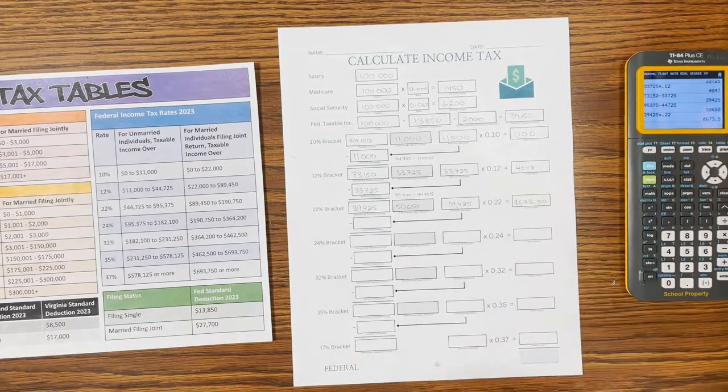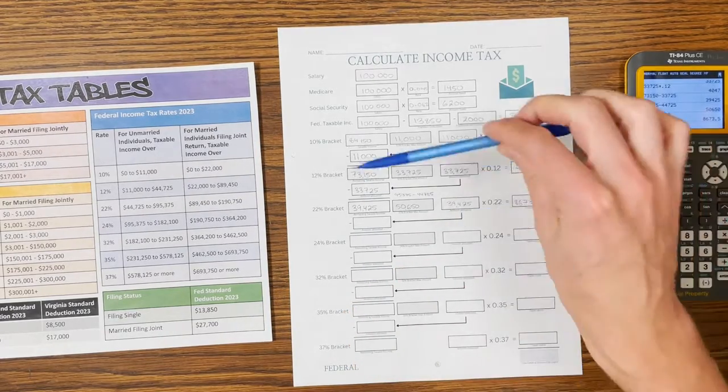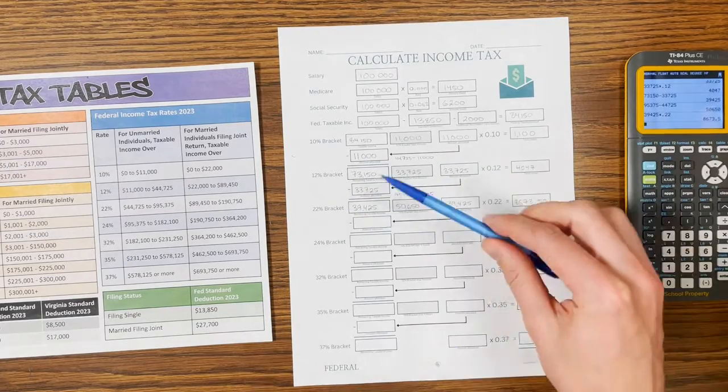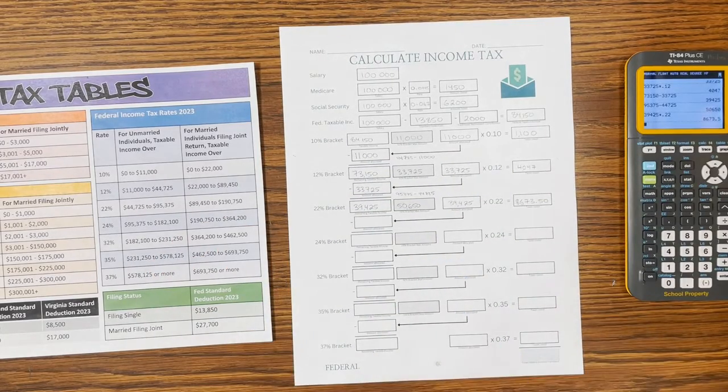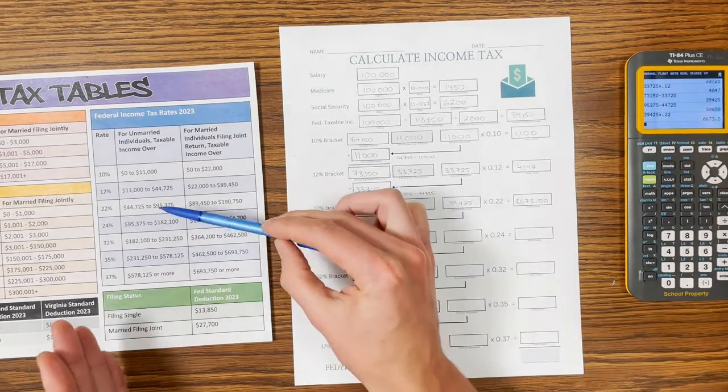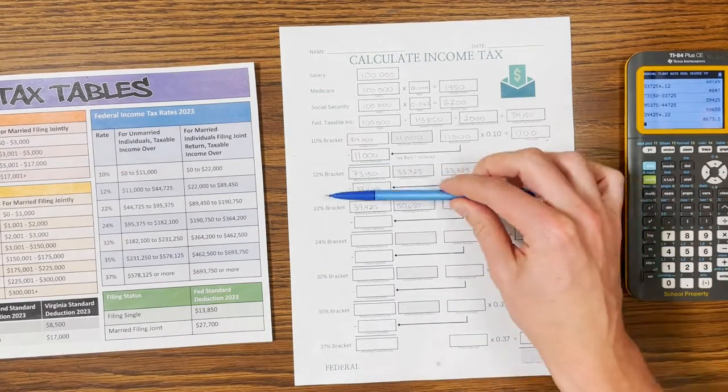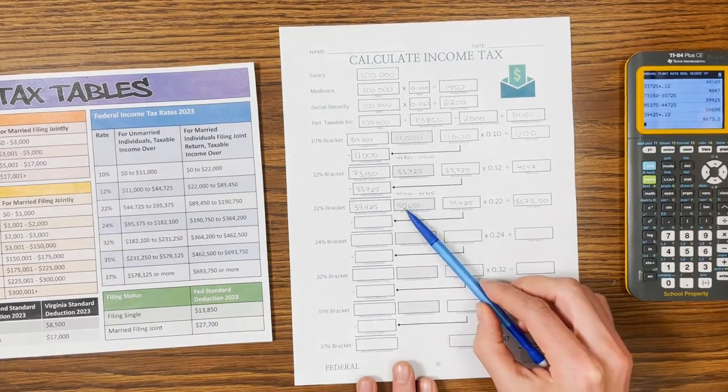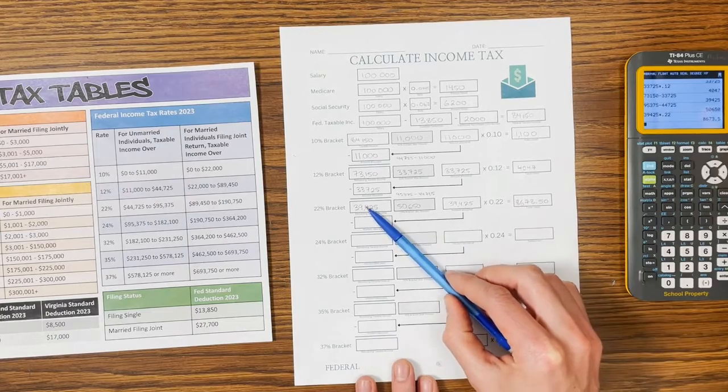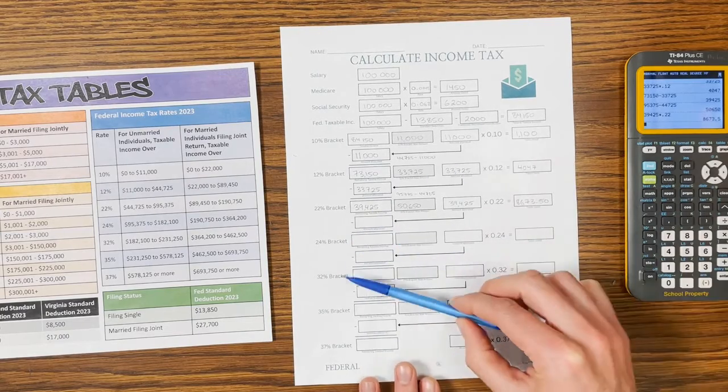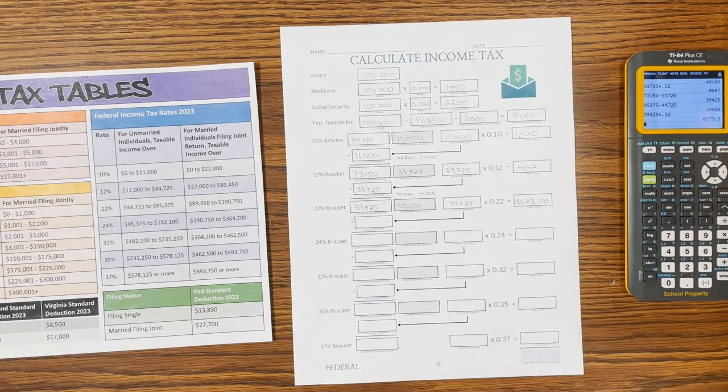And we are done now with our income. We have filled up as high as we can go. Our income has filled up to the 22% bracket. So we are considered to be in the 22% bracket when it comes to taxes. If we had made more money, we would continue to fill it up. So once we reach the $50,650 mark, then we would move into the 24%, 32%, 35%, 37%, and so on.